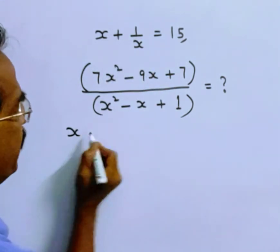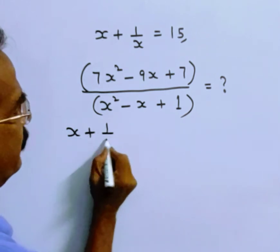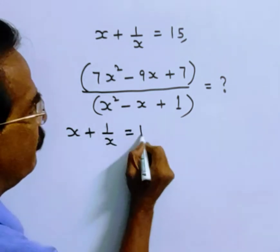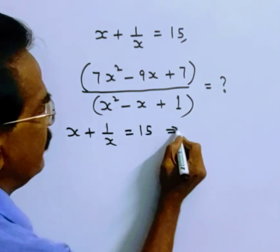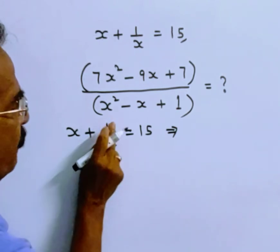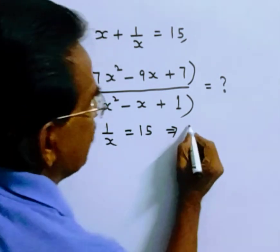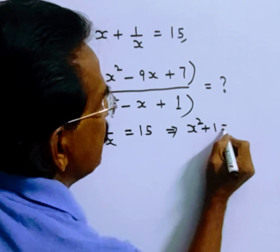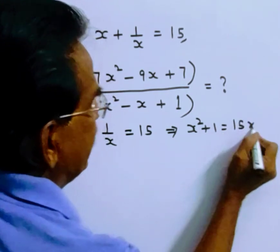x plus 1 by x equals 15 implies x² plus 1 is equal to 15x.